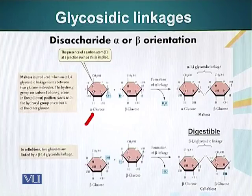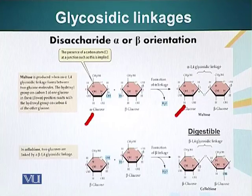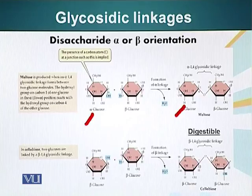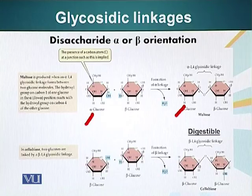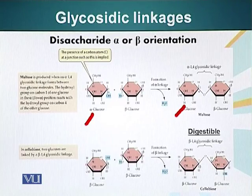A water molecule is removed and a bond is formed between two glucose molecules. The glucose molecule on the left, since it was in alpha configuration when it formed the bond with the adjacent glucose molecule, this bond will be called alpha-1,4 glycosidic linkage. Glycosidic linkage is basically the name of the bond between two carbohydrate molecules, similar to how the bond between two amino acid molecules is called a peptide bond.